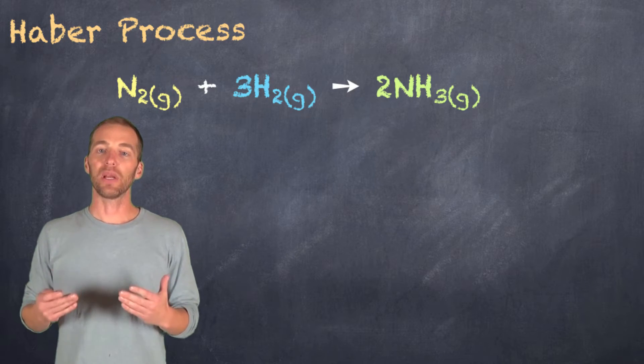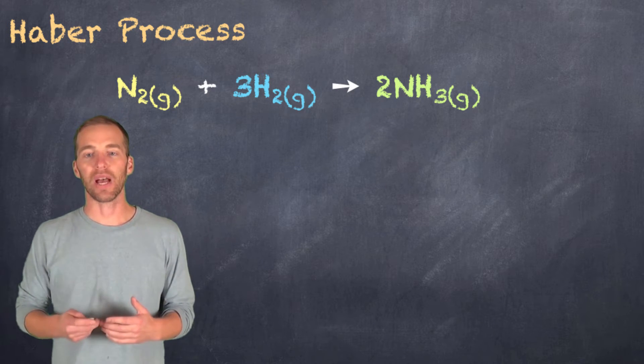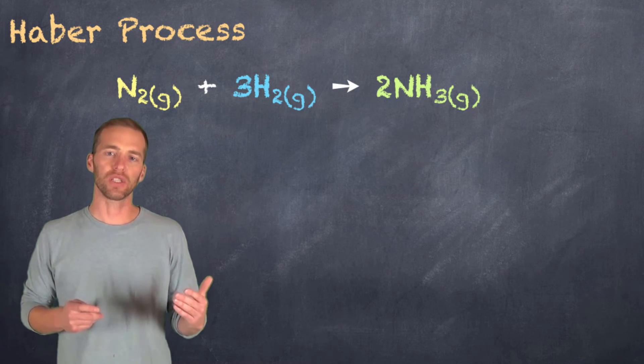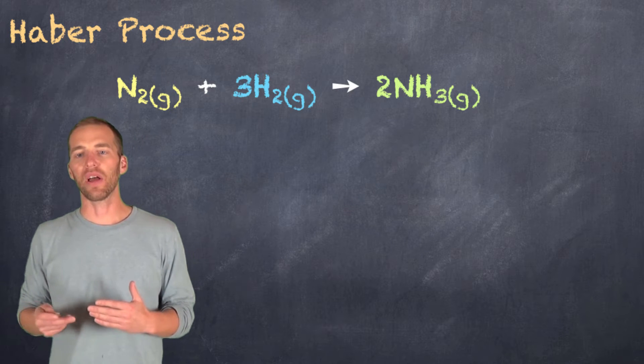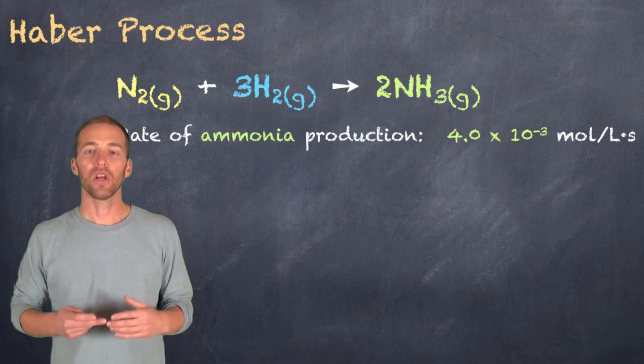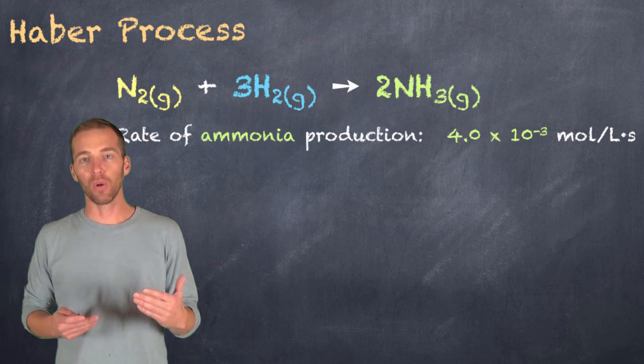Let's go back to this farmer's field and talk about an important process in chemistry — and globally in terms of worldwide fertilizer production — the Haber process. The Haber process is the production of ammonia, NH₃, from nitrogen gas and hydrogen gas. If we take a look at the rate of ammonia production and assign it a value of 4.0×10⁻³ moles per liter per second, that means every second we're producing 4.0×10⁻³ moles per liter — that's our concentration production rate.